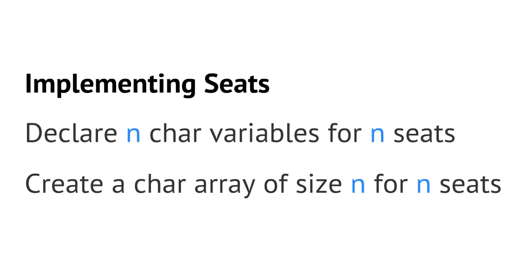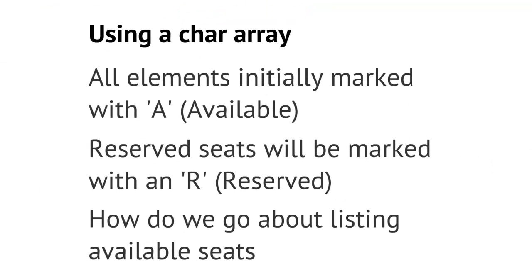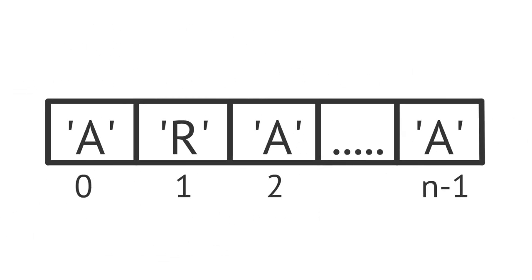Another option is to use a character array instead of individual character variables. We'd create a character array of a specific size, mark all elements initially with 'A', and mark an element with 'R' when we reserve that seat. For listing available seats, an array is much more efficient and less tedious — we simply write a for loop that traverses the array, visiting each element and comparing its contents to 'A'. The same traversal approach works for finding reserved seats or a block of available seats.